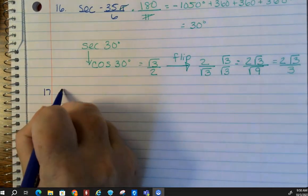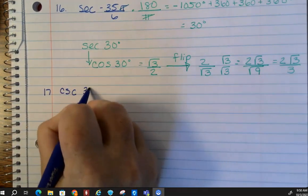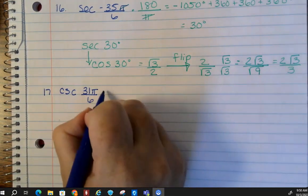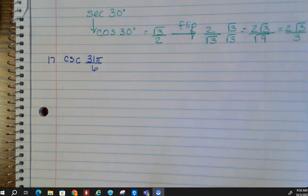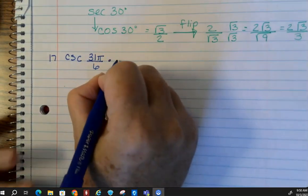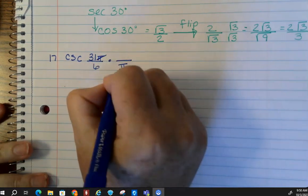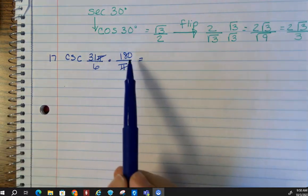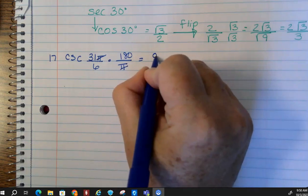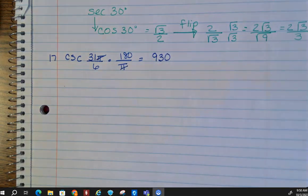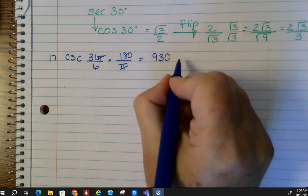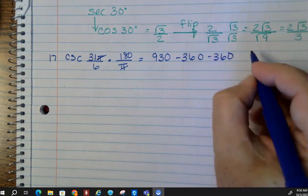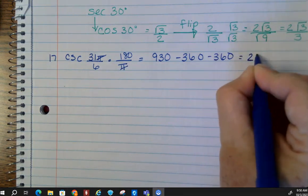Okay, so let's look at number 17. Cosecant of 31 pi over 6. So step 1, like before, we've got to get this thing on the unit circle, we've got to convert it. So we do pi at the bottom, so the pi's cancel times 180. So if you do 31 times 180 divided by 6, I've got 930. So we're going to subtract this a couple of times. I think twice did it for me, and I got 210 degrees.